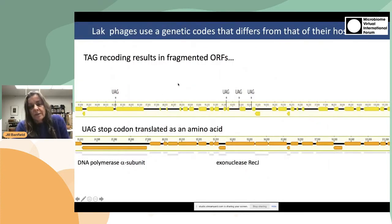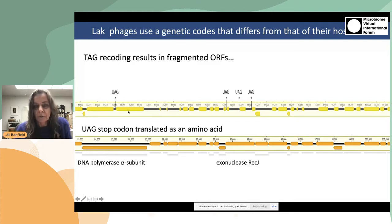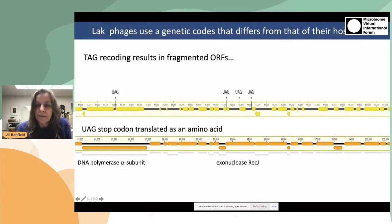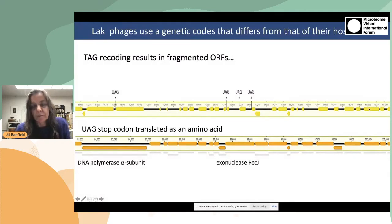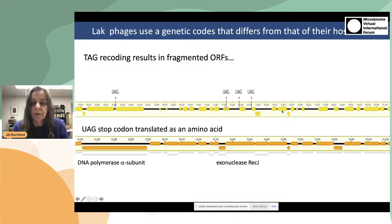What really caught our attention when looking at the gene predictions for these phage genomes is that they looked all wrong. When we go through the standard process of assigning open reading frames, we expect to see that the majority — 90% or more of the genome — will be covered by open reading frames. This was clearly not the case.